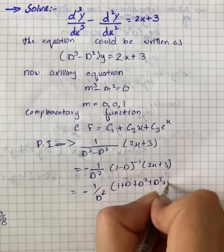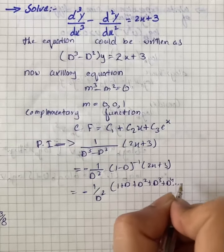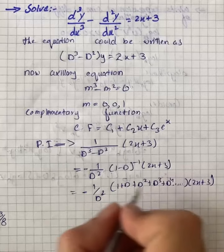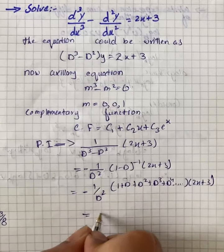On further simplification we have -1/D² into (x² + 5x).